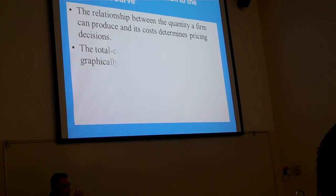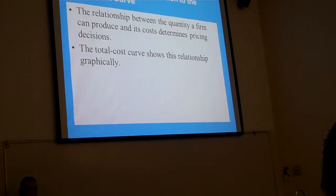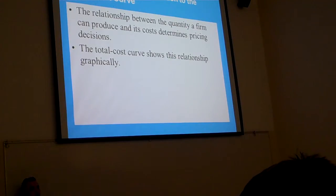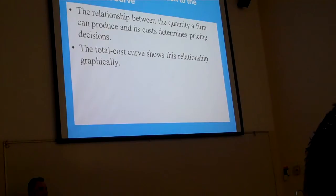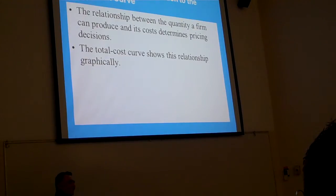The total cost curve is the relationship between cost and input. Let's go through this. With zero workers, zero output — no marginal product of labor. The fixed cost doesn't change whether we make zero or a hundred units — it's always the same. With zero labor, the total cost is $30 representing fixed costs only.